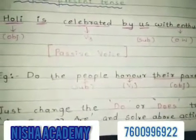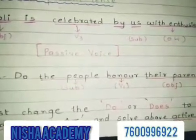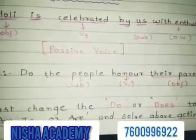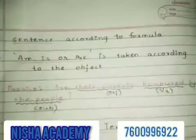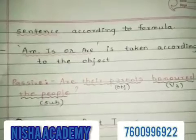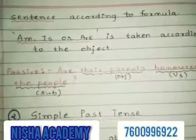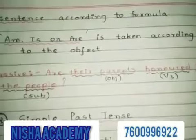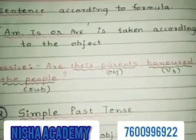If the given active voice sentence is interrogative, it can also be converted very easily. For example: 'Do the people honor their parents?' Just change 'do/does' to 'is/are' and solve according to the formula — the auxiliary is chosen according to the object. Passive: 'Are their parents honored by the people?' Here the object, V3, and subject remain according to the formula.